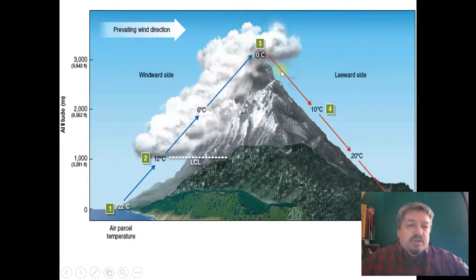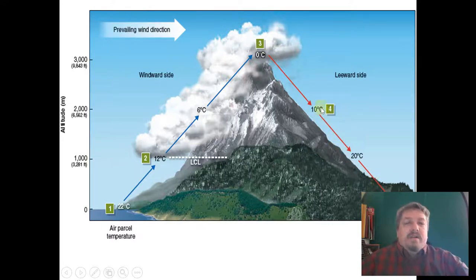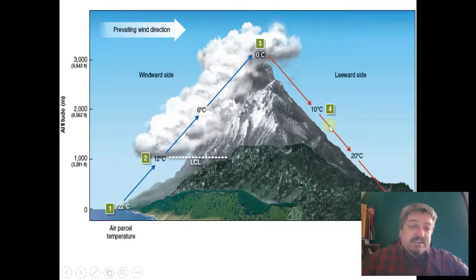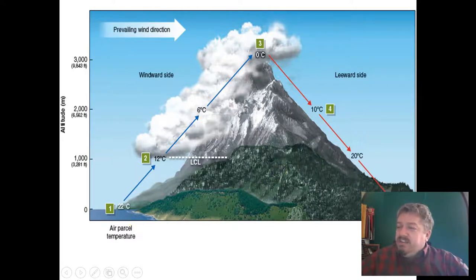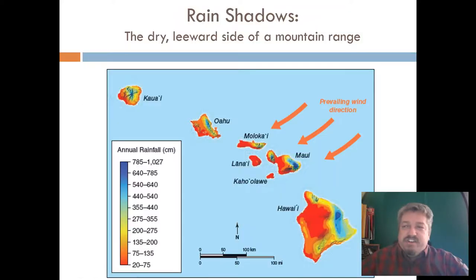Now it basically rolls down the other side of the hill. Gravity pulls it back down, and as it comes back down it starts to compress and heat up, but it's dry. And so what we have is this unique geological feature called rain shadows.